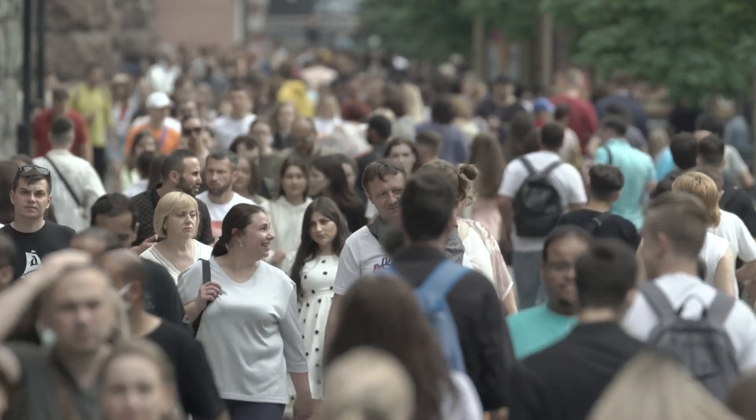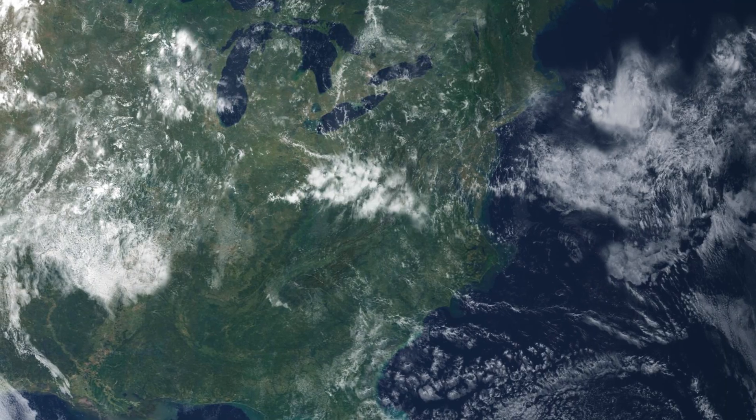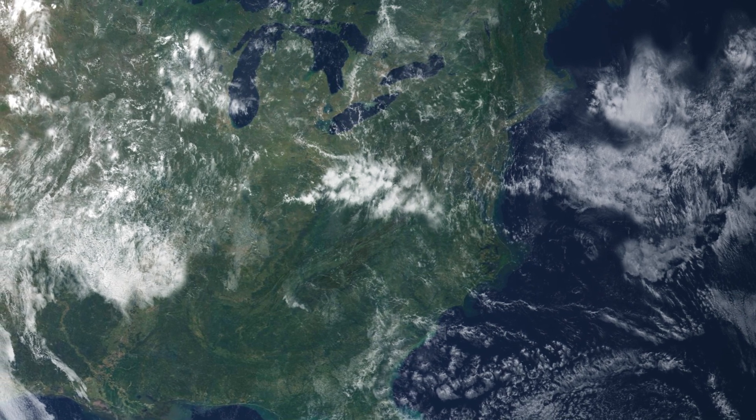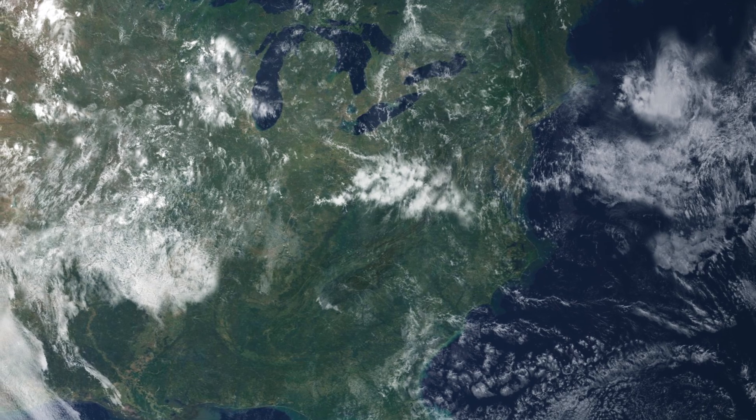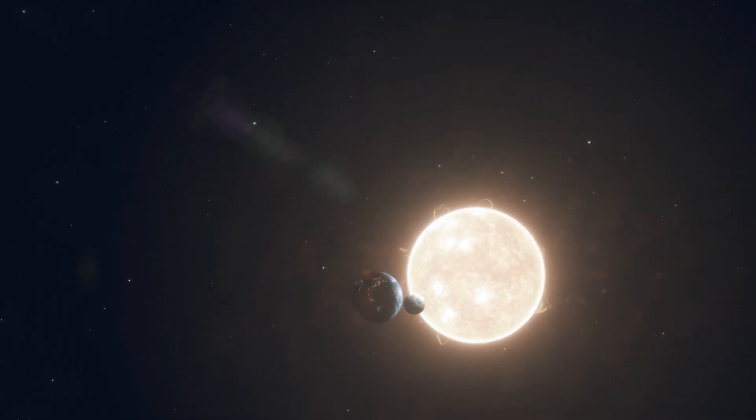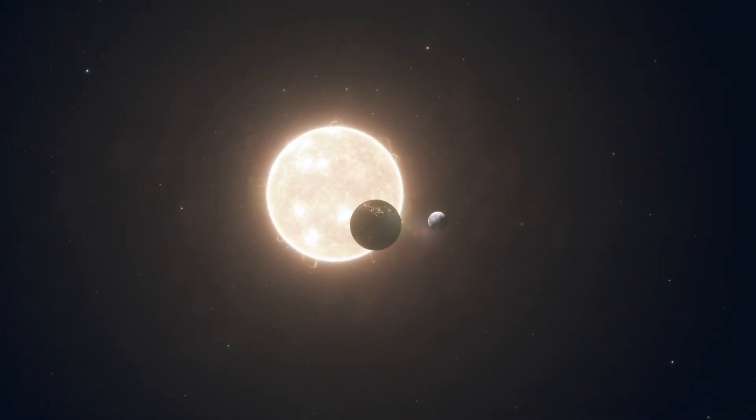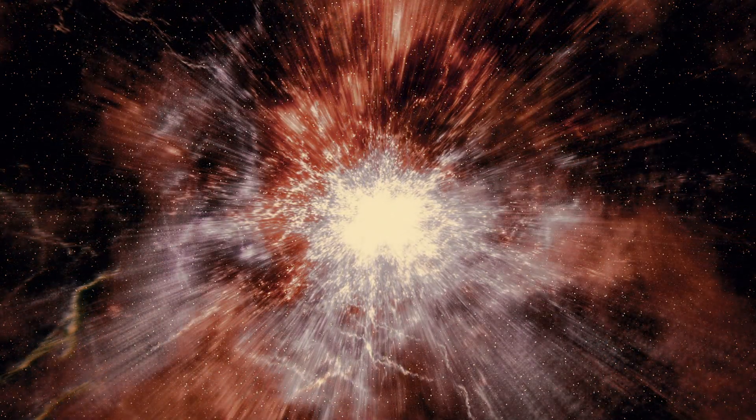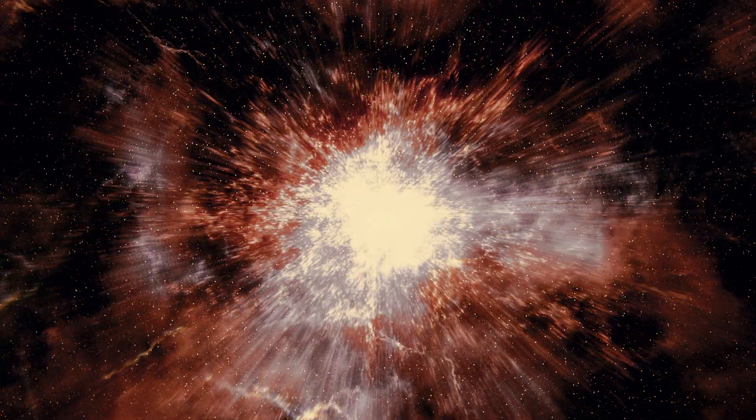When it comes to understanding habitability, it's human nature to lean into what's familiar. Traditionally, the search for extraterrestrial life or environments suitable for life has revolved around planets that resemble Earth. The Goldilocks zone, where conditions are neither too hot nor too cold for liquid water to exist, has been our guiding light. But the universe, with its vast and diverse wonders, doesn't always conform to our Earth-centric models.